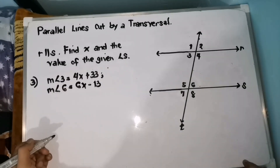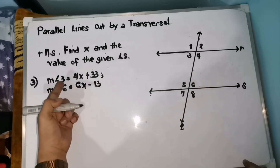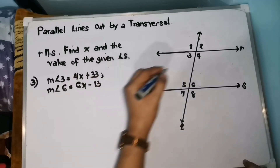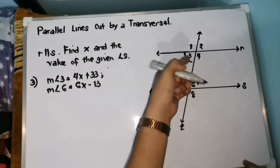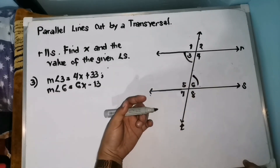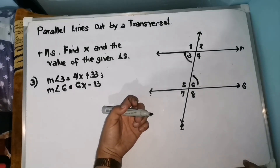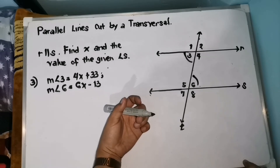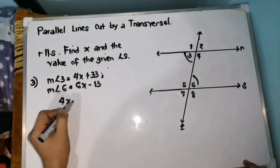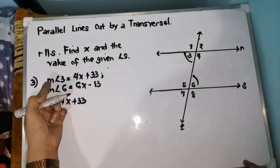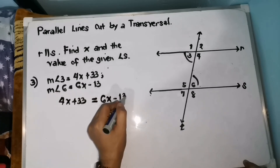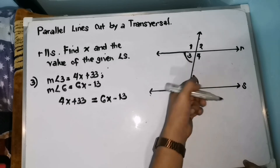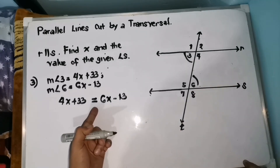For our last item, number 3: measurement of angle 3 is 4X plus 33, and measurement of angle 6 equals 6X minus 13. Angle 3 and angle 6 are alternate interior angles, and according to the properties, they must be congruent. So therefore, 4X plus 33 must be equal to 6X minus 13.